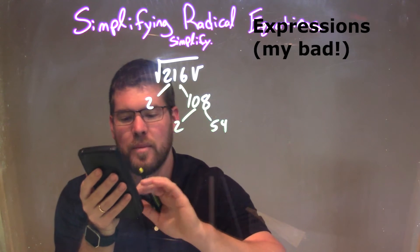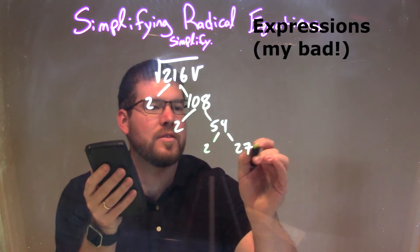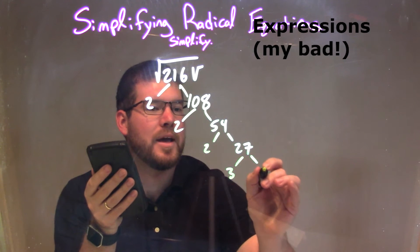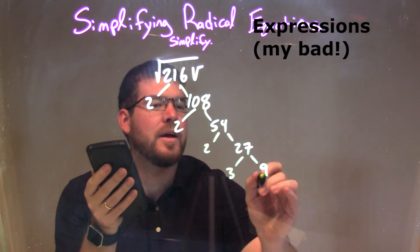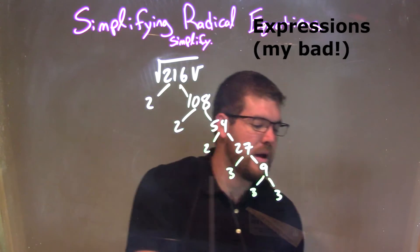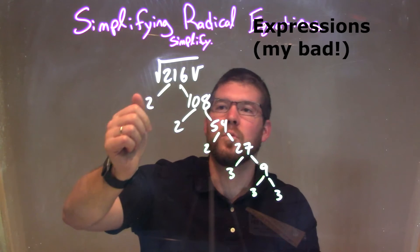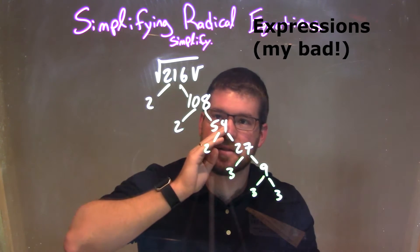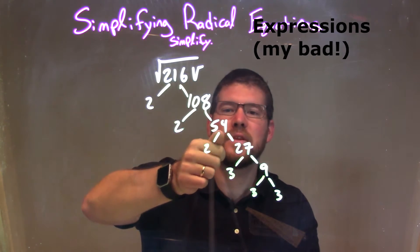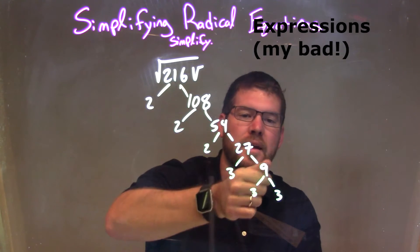54 divided by 2 — let's just keep going — gives us 27. So we have 2 and 27, and 27 I know is divisible by 3. So we have 3 and 9 there, and 9 is divided by 3 twice as well, and there we have it.